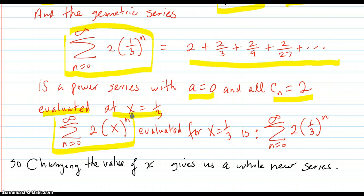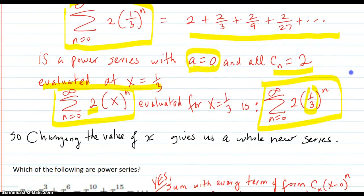There's your series form with all the c_n equal to 2, (x minus zero), so a is zero, to the n power, evaluated for x equal 1/3. Put the 1/3 in there, so you get this series, which is the geometric series. Those are just examples of special cases of a power series.